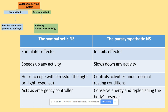The autonomic nervous system is divided into two: sympathetic and parasympathetic. Sympathetic speeds up — it's easy to remember that sympathetic speeds up activity and parasympathetic slows it down. Sympathetic stimulates the effector, while parasympathetic will inhibit the effector and slow down activity. Sympathetic helps cope with stressful situations, acting as emergency control, while parasympathetic controls activities under normal resting conditions and conserves energy, replenishing the body's reserves.